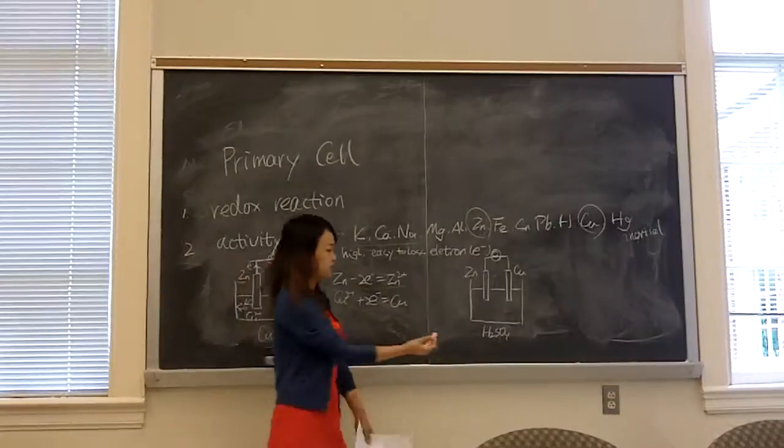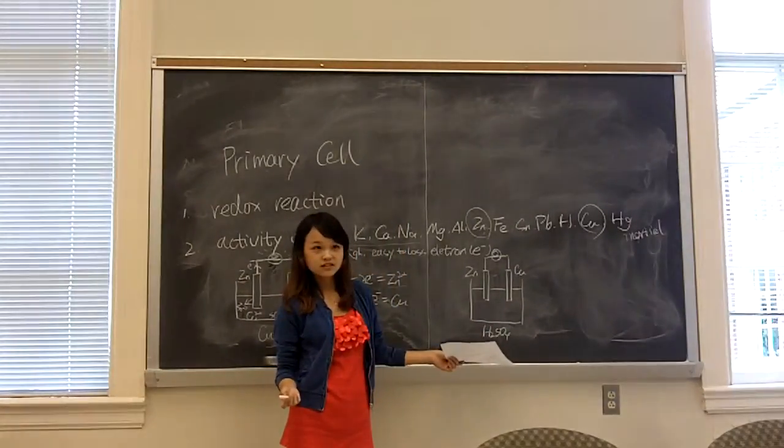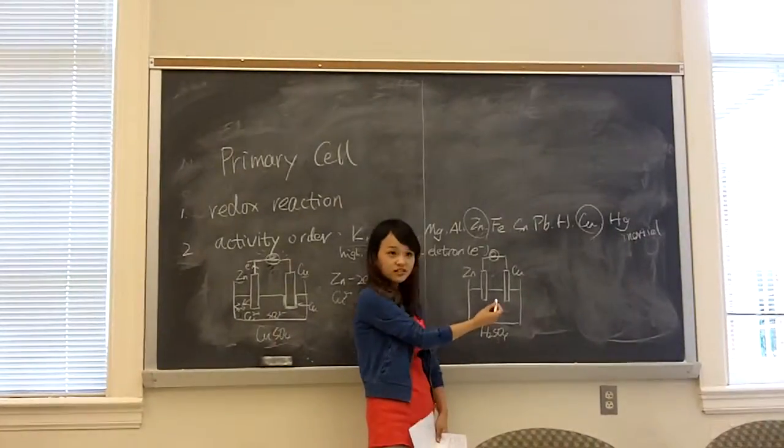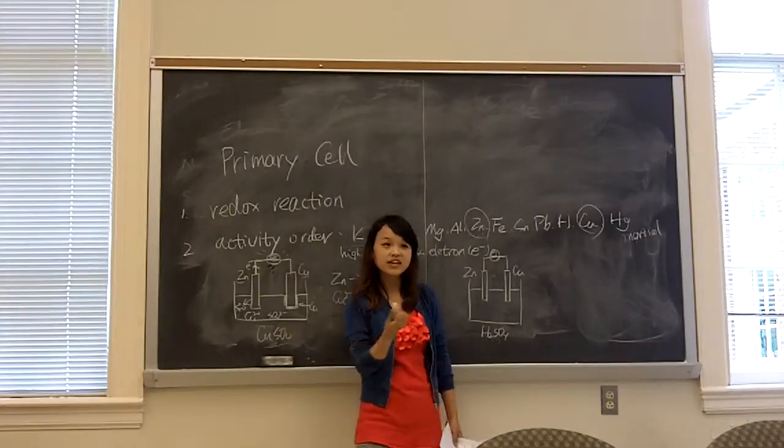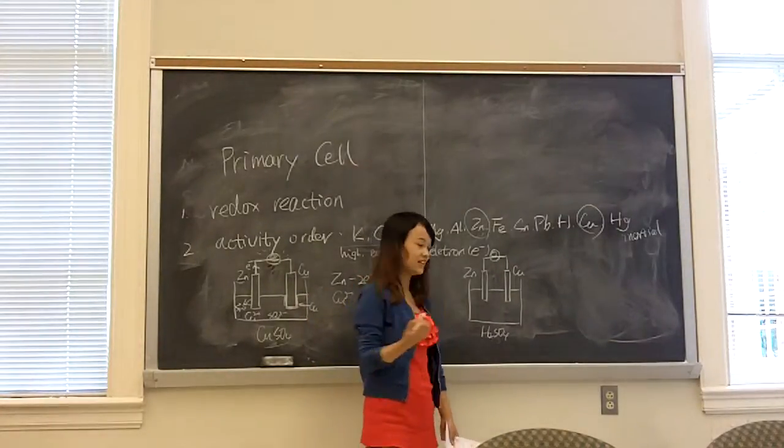What about this time? I changed the solution into a sulfuric acid. So what would be in this solution? A kind of ion. What kind of ion? H plus and SO4 two minus.